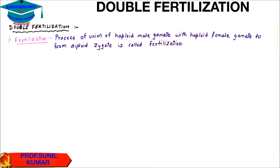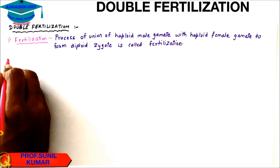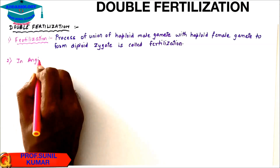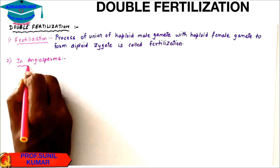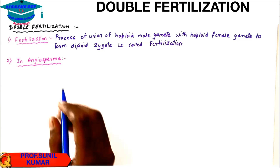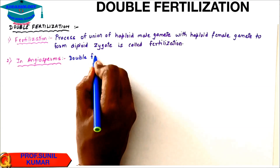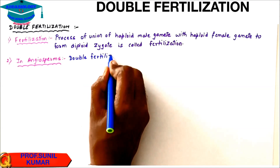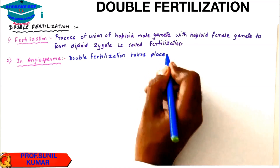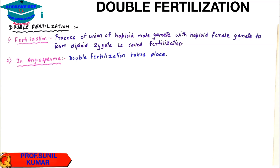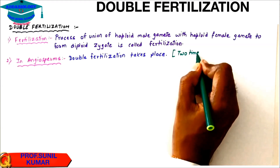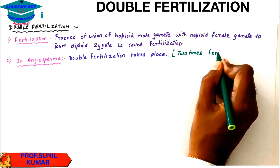All angiosperms show double fertilization. When I use the word double fertilization, it simply means that there are two male gametes and there will be two instances of fertilization taking place.